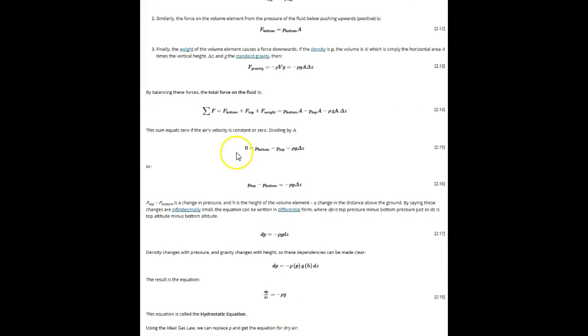Notice how the cross-sectional area can be divided out. The next step is to put the pressure difference on the left-hand side, and then shrink the air parcel height to be infinitesimally small, which makes the pressure difference infinitesimally small. By dividing both sides by the infinitesimally small height, we end up with an equation that's the derivative of the pressure with respect to height, which is equal to minus the parcel's density times gravity.